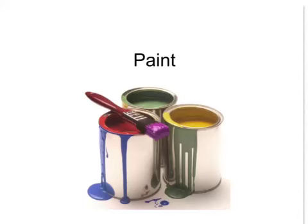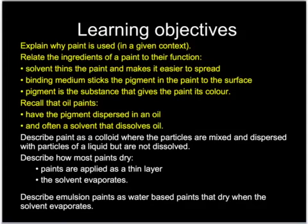This tutorial is all about paint — the two kinds of paint, which are emulsion paint and oil paint, and their similarities and their differences. It also covers colloids, which are special kinds of mixtures used in paint amongst other things. You need to know why paint is used in a particular context, the three main ingredients of a paint and what they are for, and the differences between oil paints and emulsion paints. You must also understand the meaning of the term colloid, a special kind of mixture.